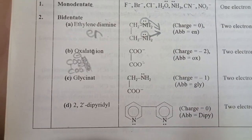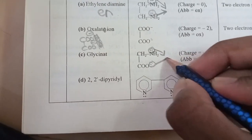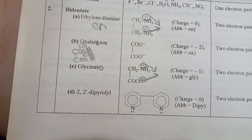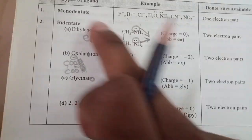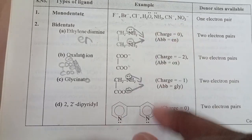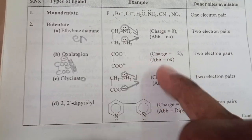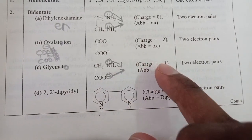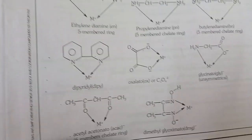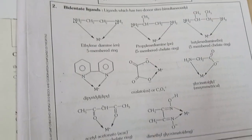Glycine is also a bidentate ligand with one negative charge — as a ligand it is called glycinate. It donates two electron pairs. So to summarize: ethylene diamine (EN) has charge 0, oxalato has charge −2, glycinate donates two electrons. These are all bidentate ligands.